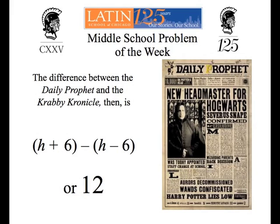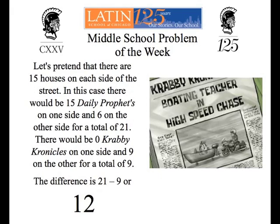For those of you who have not had algebra, let's play pretend. Let's pretend there are 15 houses on each side of the street. That gives 15 Daily Prophets on one side and 6 on the other, for a total of 21. For the Krabby Chronicle, there are 0 on one side and 9 on the other, for a total of 9.